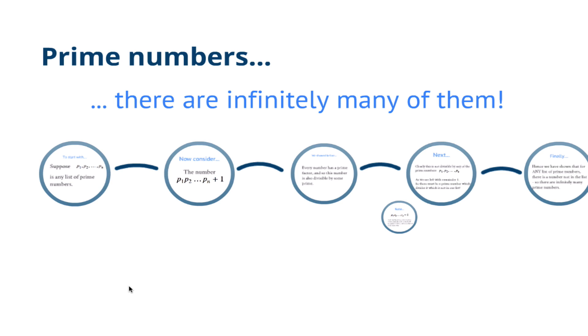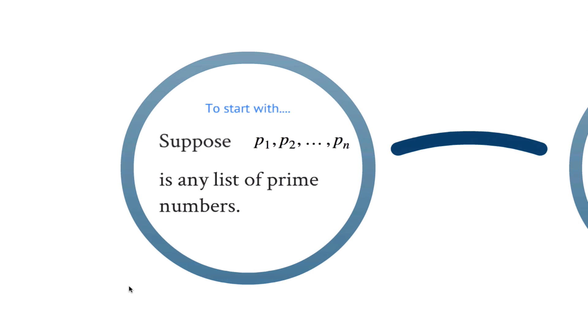In this screencast, I'm going to present a proof of the theorem that there are infinitely many prime numbers. To start with, consider a list p1, p2, up to pn of prime numbers. This could be a list which contains any prime numbers and any number of prime numbers.